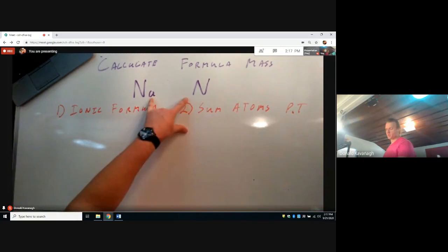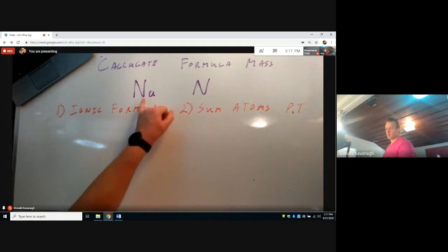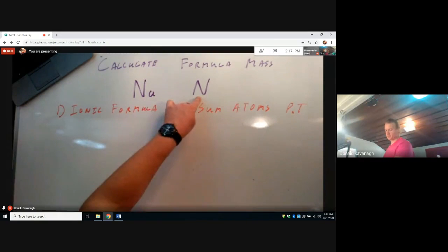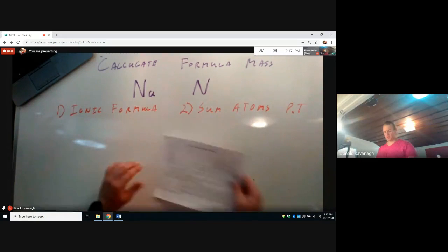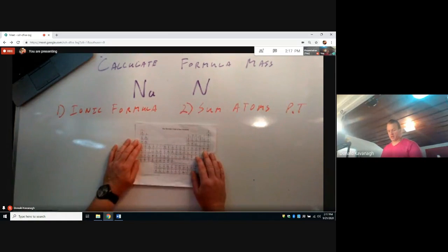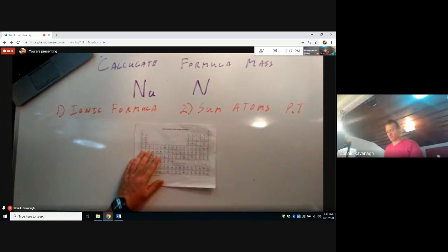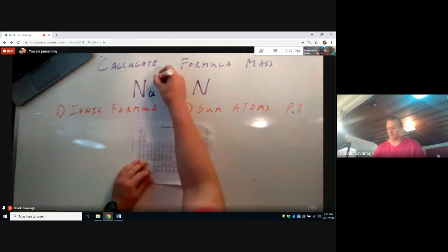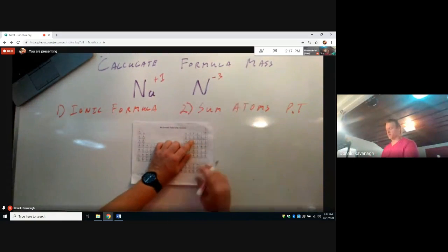You should be able to recognize that this will form an ionic compound because you have an atom of metal and non-metal, or an atom of low electronegativity and high electronegativity. For step one, we need to determine the common charges of each of these atoms. The location on the periodic table gives us a hint of the structure and arrangement of the electrons. Sodium is commonly going to have a plus one charge, and nitrogen is commonly going to have a negative three charge based on their electronic configuration.